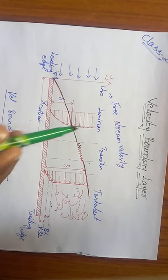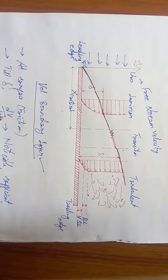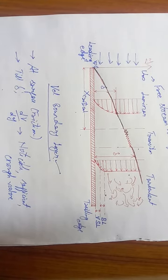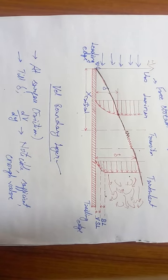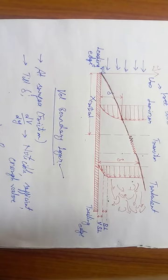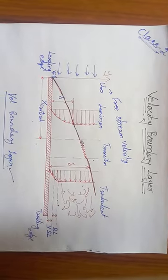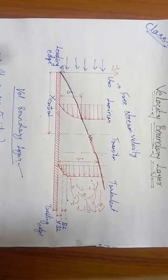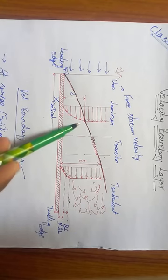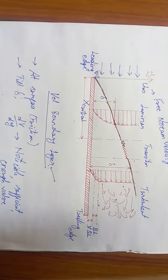After the boundary layer, even if y increases, there is no significant change in velocity. From Newton's law of viscosity, tau is proportional to dv/dy multiplied by dynamic viscosity mu. After this boundary layer thickness, dv/dy is negligible, meaning the effect of shear stress on the flow is negligible—not exactly zero, but negligible. Within delta, the effect of shear stress on the flow is at a maximum.